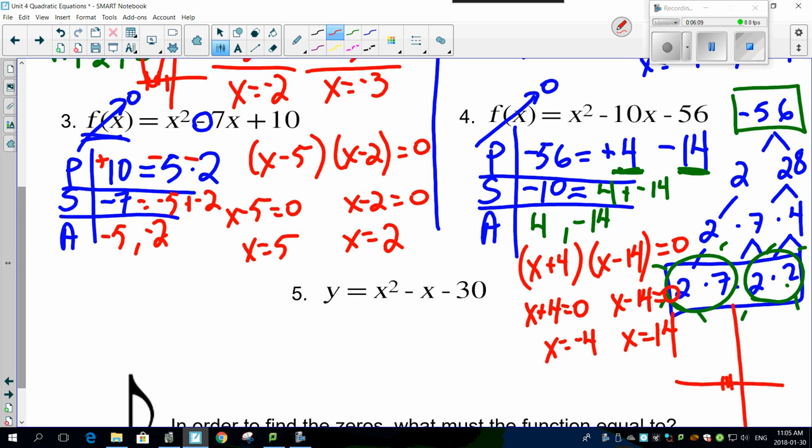So if you were to graph this out, -4 would be here, 14 would be all the way out here somewhere, and you'd get a parabola that looks something like that. Okay, so let's go one more step.